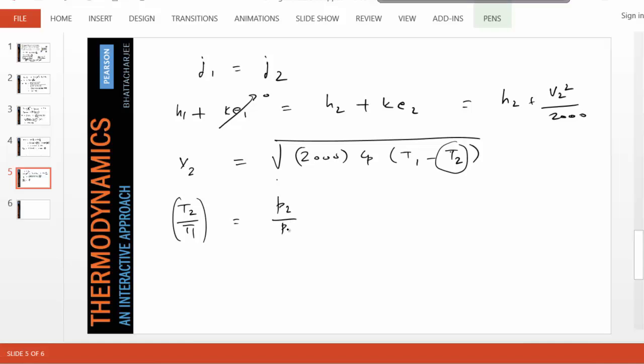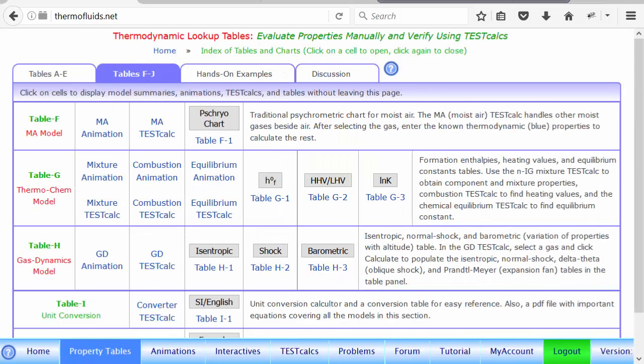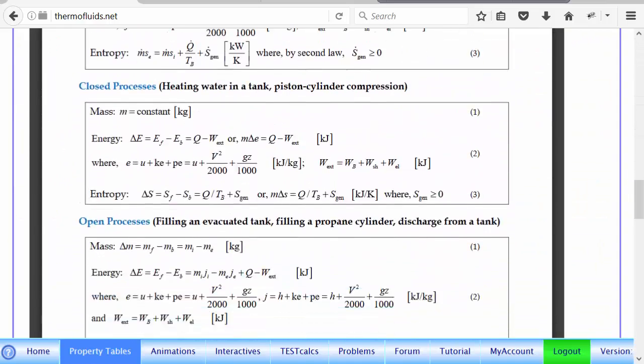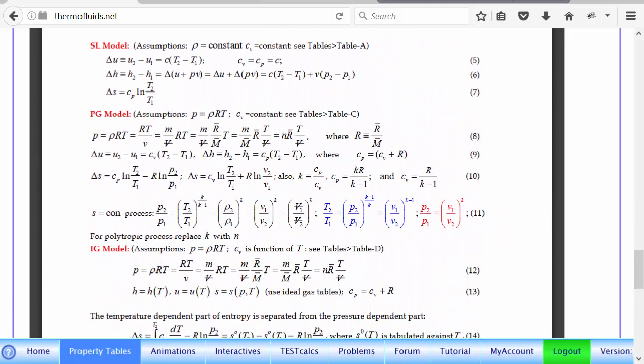the following equation: T2 over T1 equals P2 over P1 to the k minus 1 over k. Once again, where do we get that? We get those relationships from table J, the formula sheet. And if you go down, if you find the perfect gas model, you will notice that it will give us the isentropic relation, various forms of it. And since you know the pressure ratio and we want to find the temperature ratio, this would be the perfect equation to use. They come from setting delta S as 0.